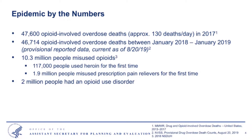These are provisional data, and we don't have the final 2018 mortality data until the end of this calendar year. Just a week ago, the Substance Abuse and Mental Health Services Administration released its 2018 data for the National Survey on Drug Use and Health — an annual survey of the U.S. population ages 12 and older, which is our major source of statistical information on illicit drugs, tobacco, alcohol, and mental health issues. In that most recent data release, 10.3 million people reported misusing opioids, and 2 million people reported having an opioid use disorder.